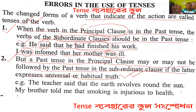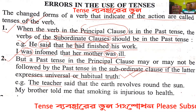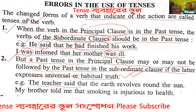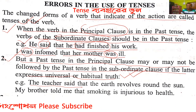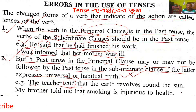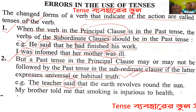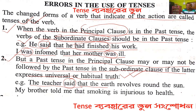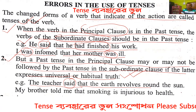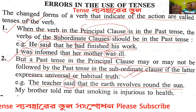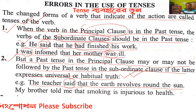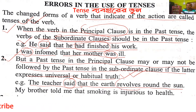Example: 'The teacher said that the earth revolves round the sun.' Here 'said' is past tense in the principal clause. But in the subordinate clause, 'revolves' is present tense — because it is a universal truth, chiro-satyagata kotha. So present tense is used.